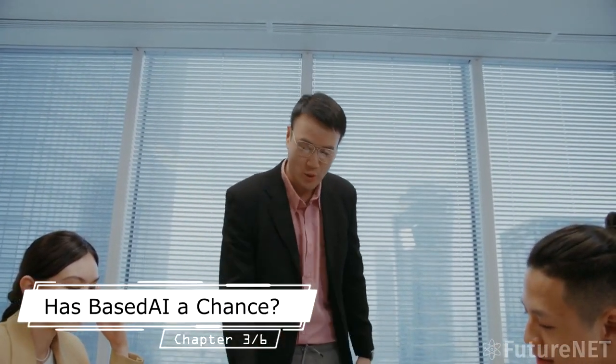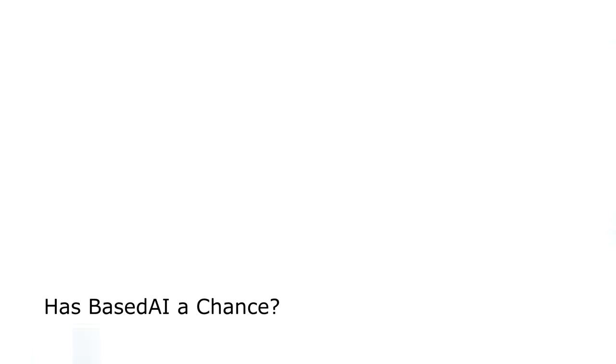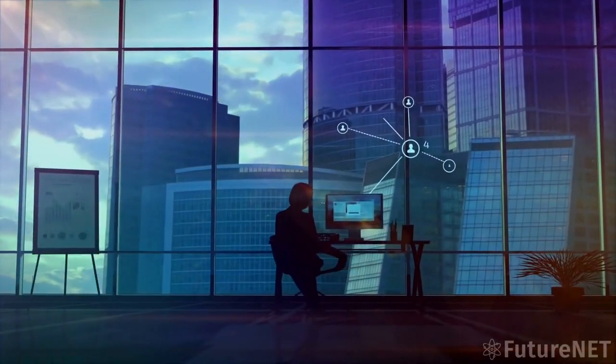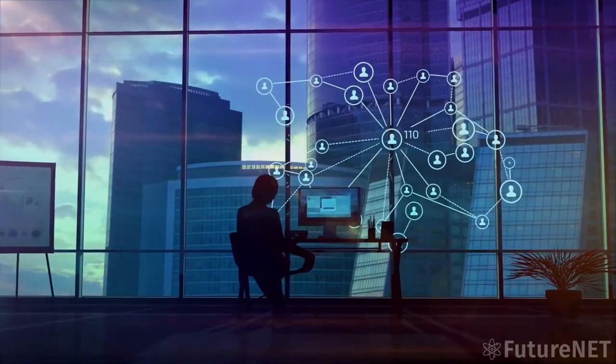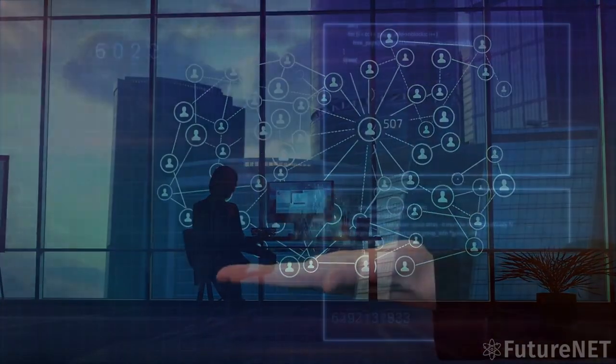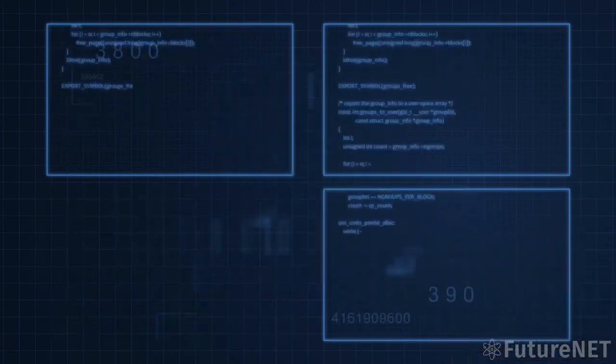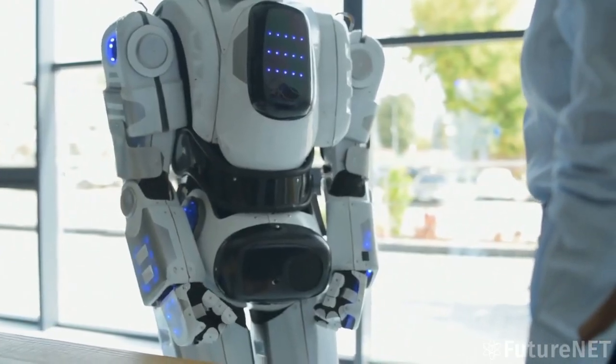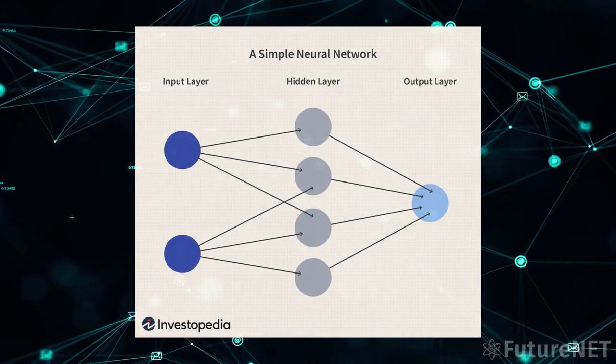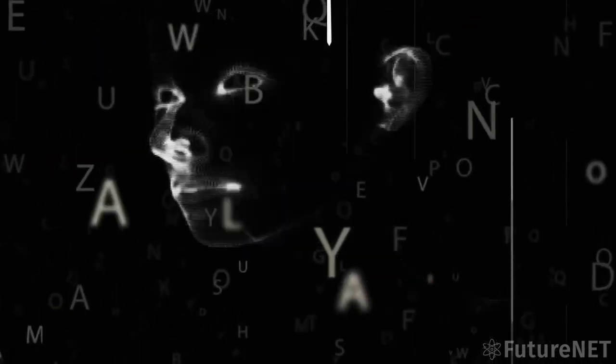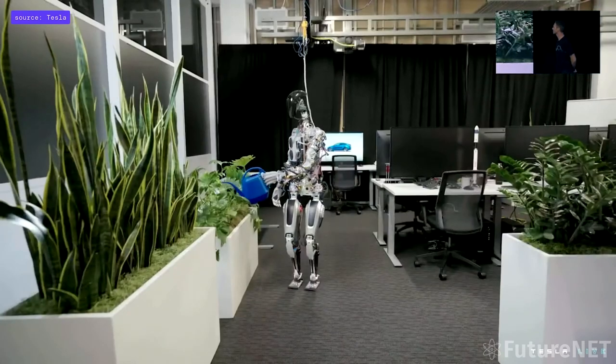Elon Musk's proposed AI system, BasedAI, has generated a lot of excitement and controversy in the tech world. The system is designed to be more powerful and versatile than OpenAI. While BasedAI promises to revolutionize the field of artificial intelligence, it's also expected to have some drawbacks. One of the main advantages of BasedAI over OpenAI is its ability to learn quickly and adapt to new situations. This is achieved through the use of neural networks, which can simulate the way that the human brain processes information.